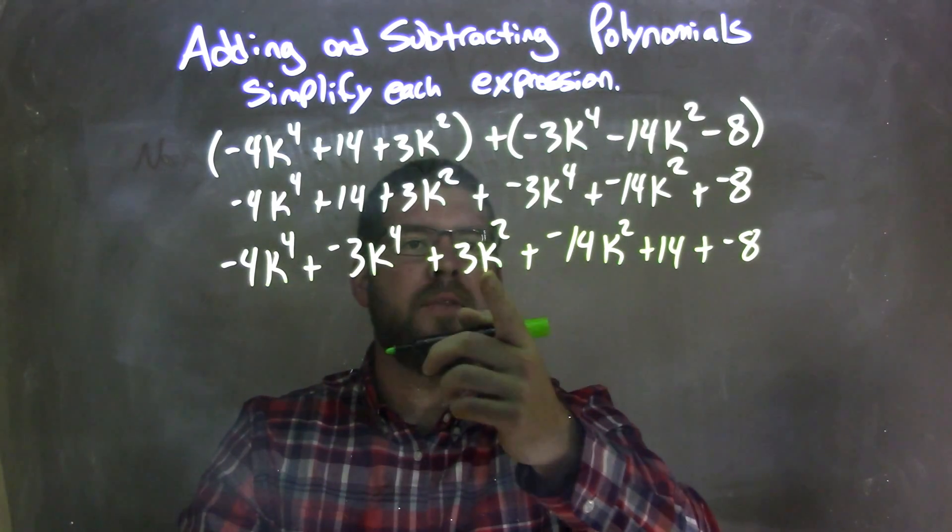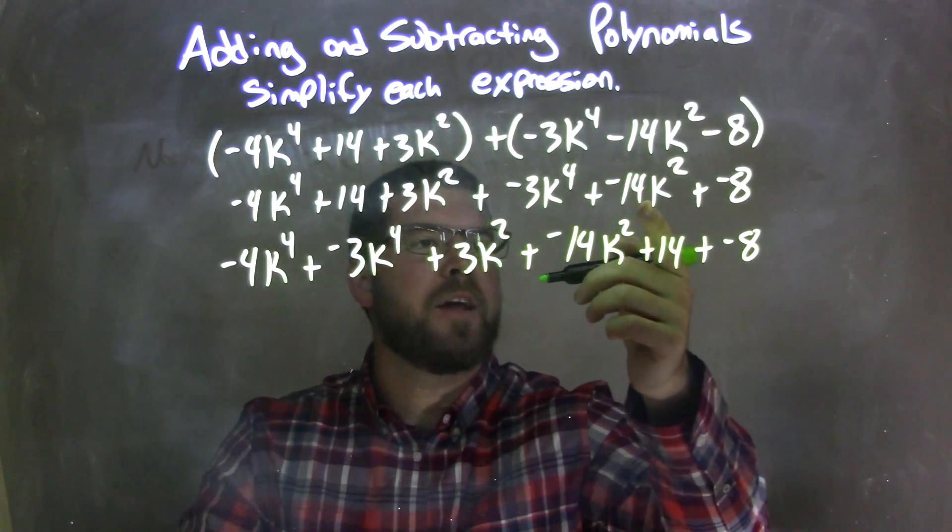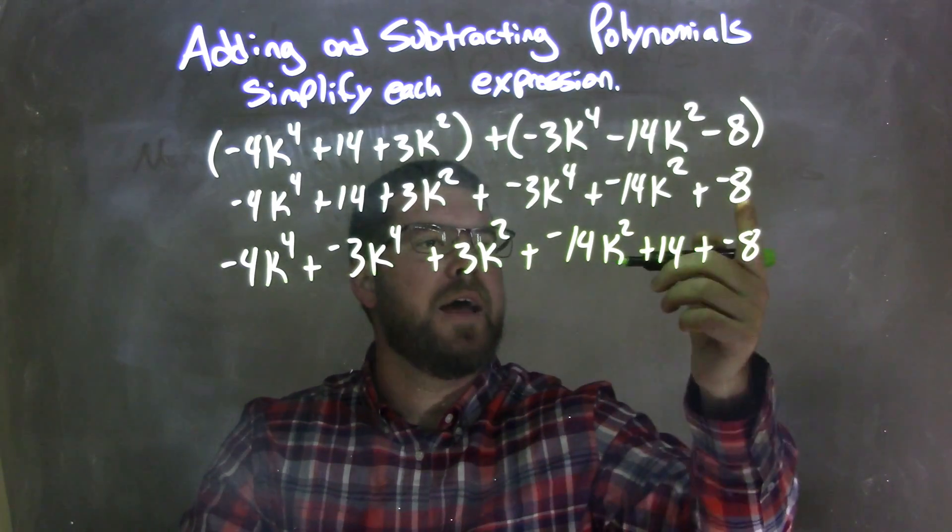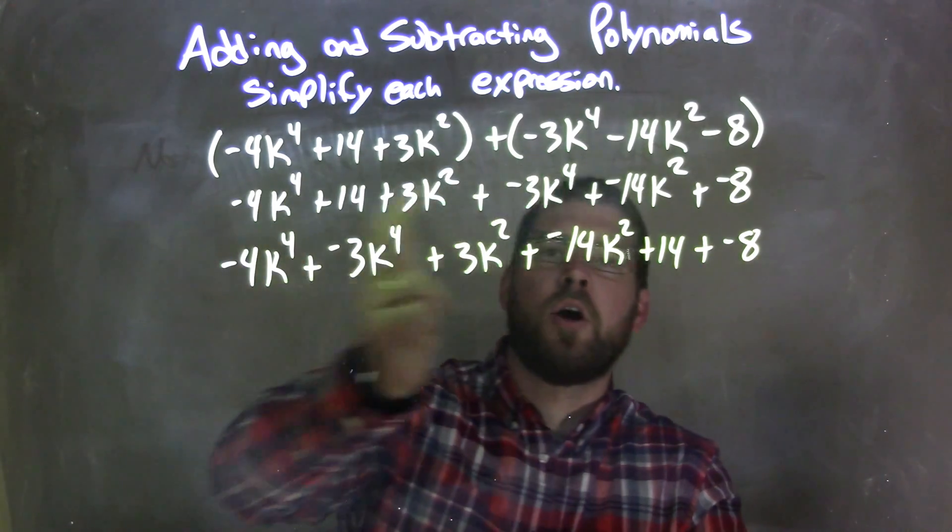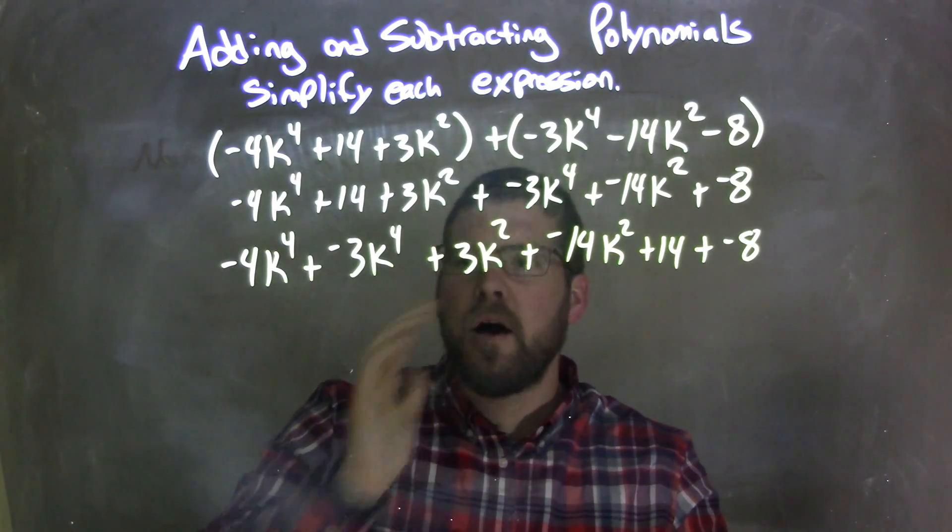Negative 3k to the 4th, right there. Negative 14k squared, right there. And negative 8, right there. I went through all the terms. All of them were transferred down correctly.